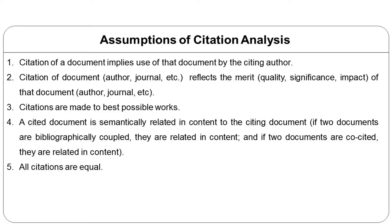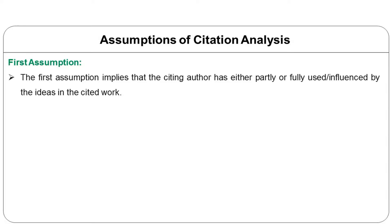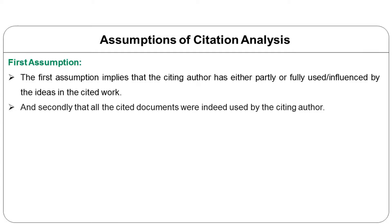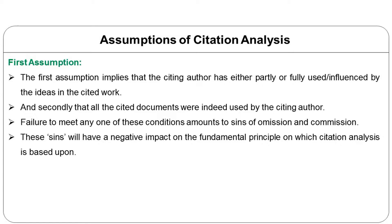The first assumption — that citation of a document implies its use by the citing author — implies that the citing author has either partially or fully used or been influenced by the ideas of the cited work, and that all cited documents were indeed used by the citing author. In fact, this may not always be the case. The sins of omission and commission will lead to errors in the citation analysis results and will have a negative impact on the fundamental principles on which citation analysis is based.